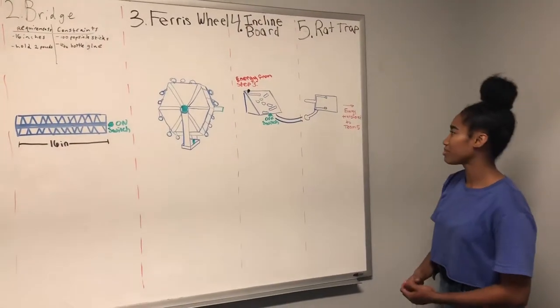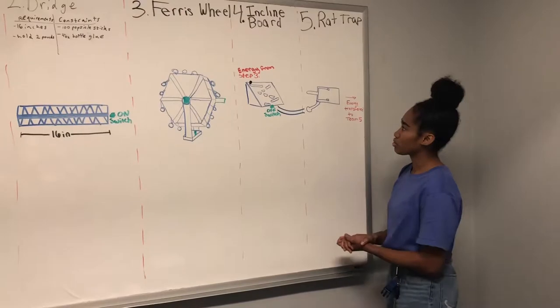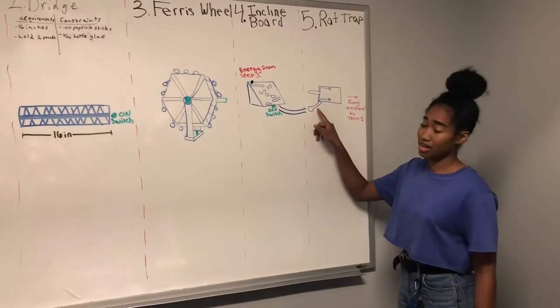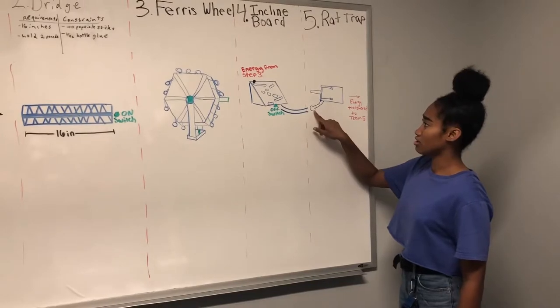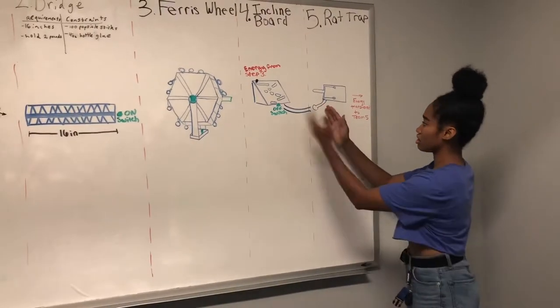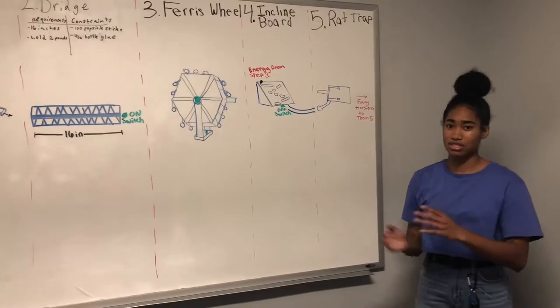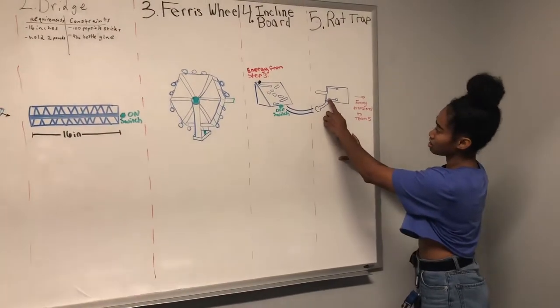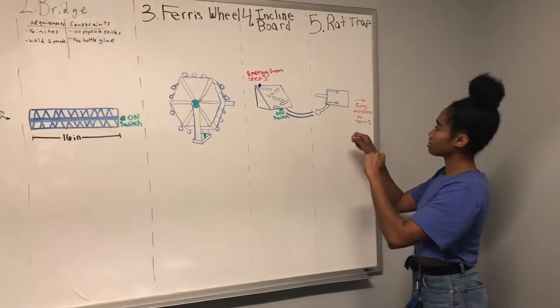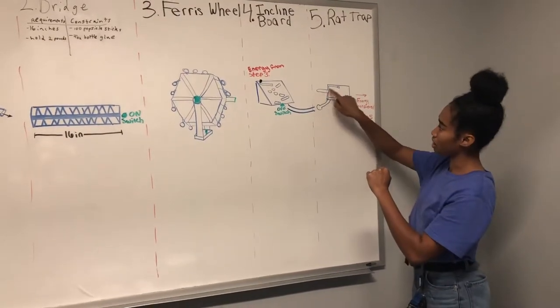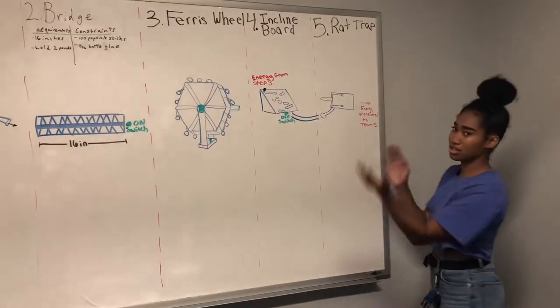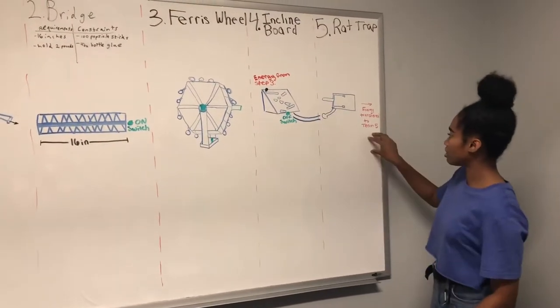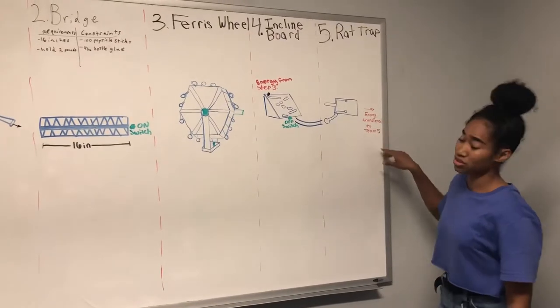So, Step 5, the rat trap, it's a quick action. Basically, it's activated by the steel ball from Step 4. It's just going to nudge the object we have, which is going to be a little weighted, so it holds this string, which holds back this metal mechanism that holds a popsicle stick attached, that will basically slam into Team 5's button, which will have energy transferred to Team 5.